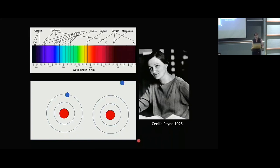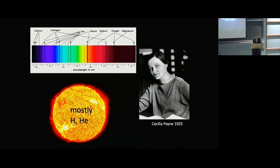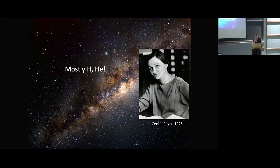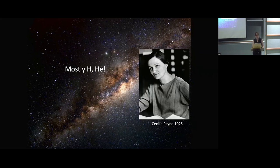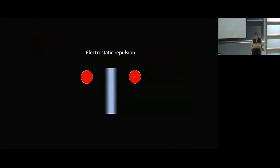But Cecilia Payne realized that there's something quite different about hydrogen and helium, which made it harder for these elements to absorb the photons, much less likely. And so the lines that we see only represent a tiny fraction of the total amount of hydrogen and helium in the sun. And with that she concluded that hydrogen and helium are actually the most abundant elements in the sun, and in fact, the whole universe was basically made of hydrogen and helium.